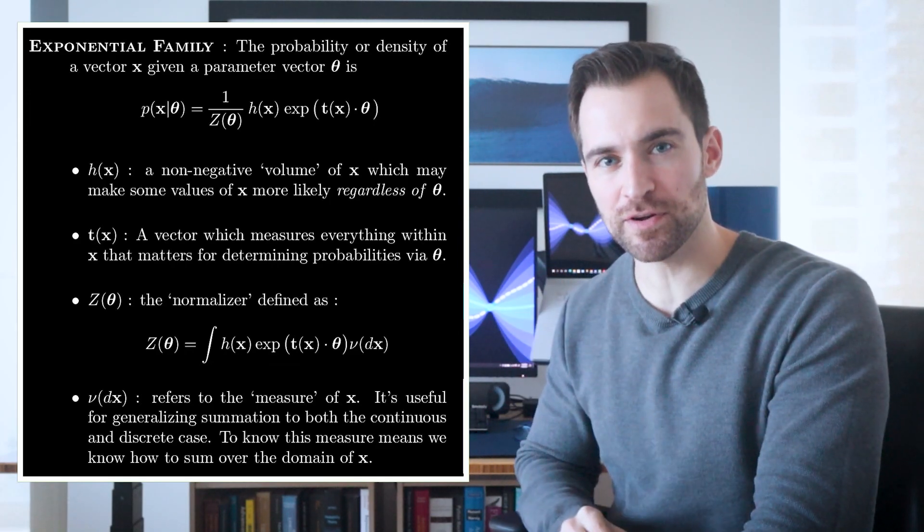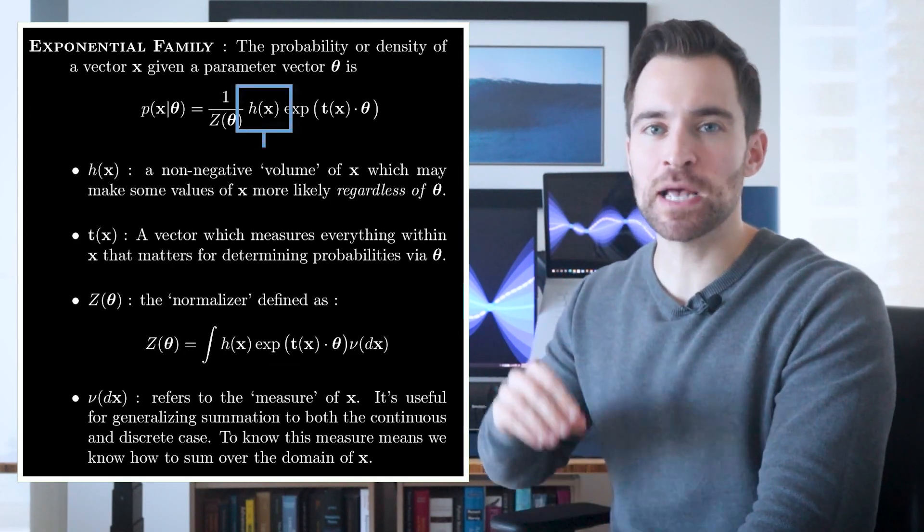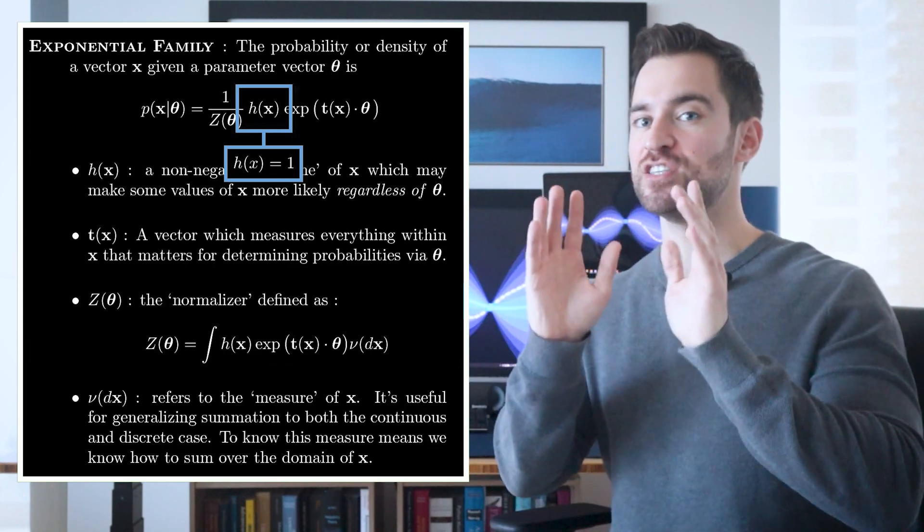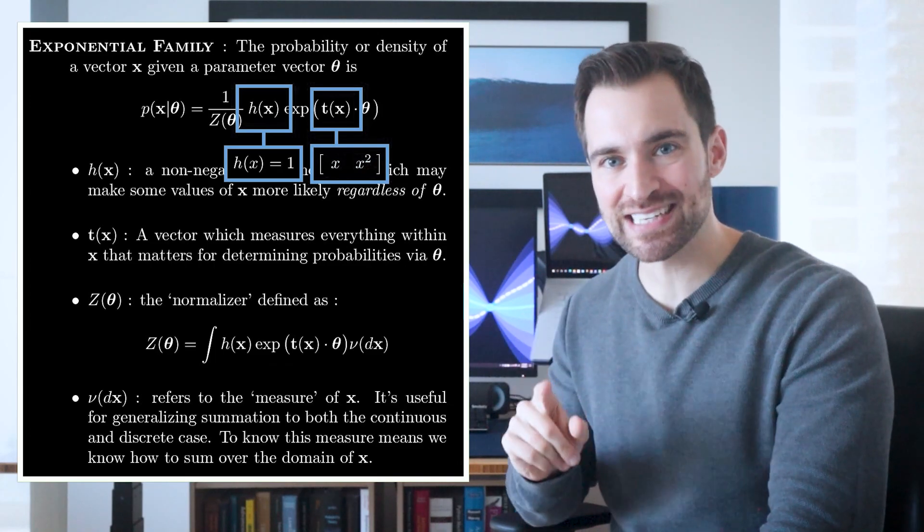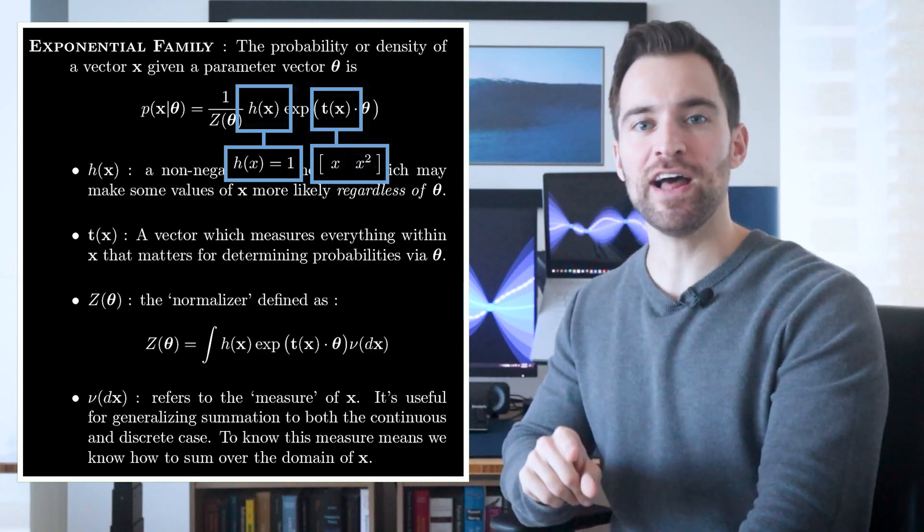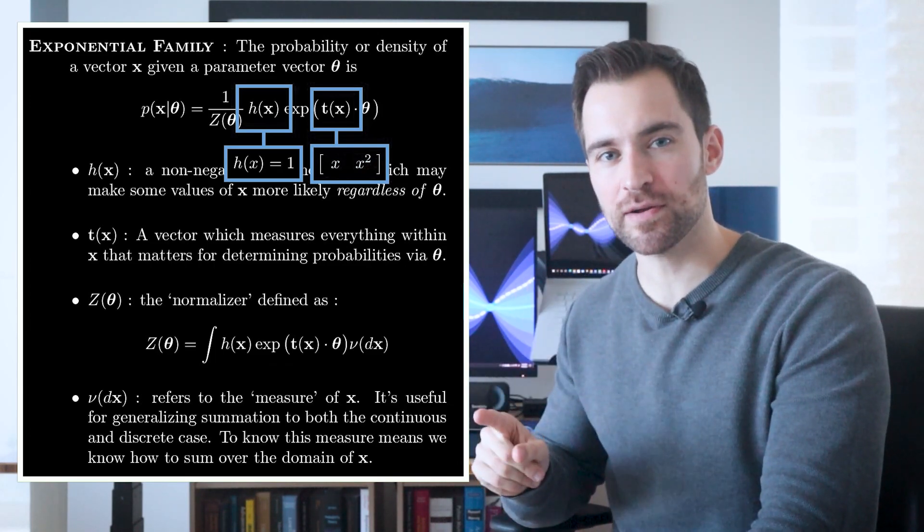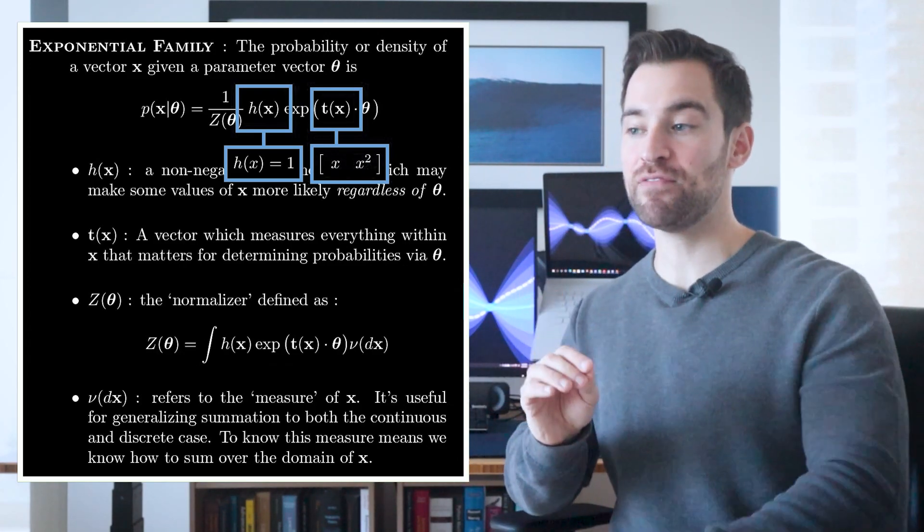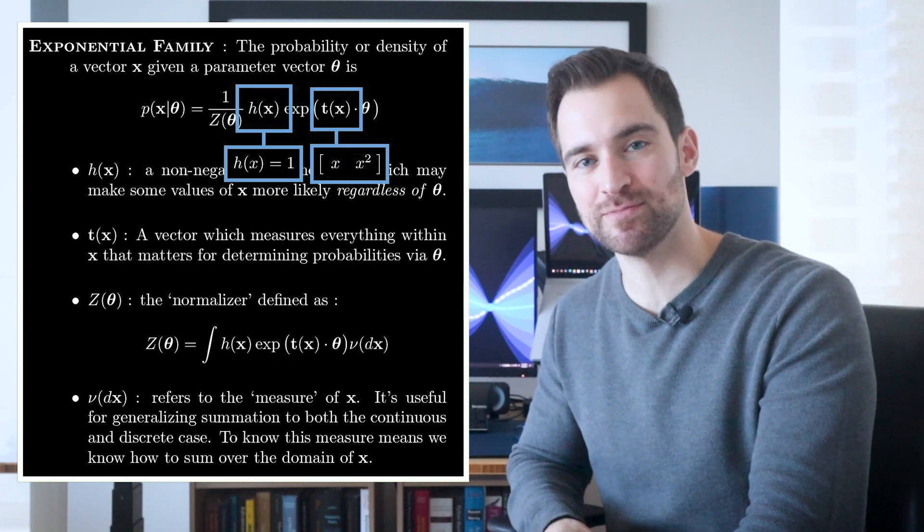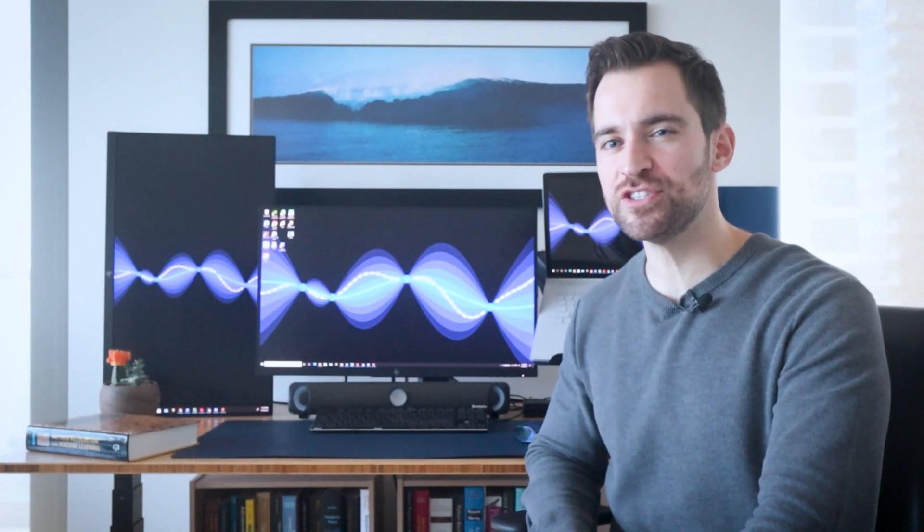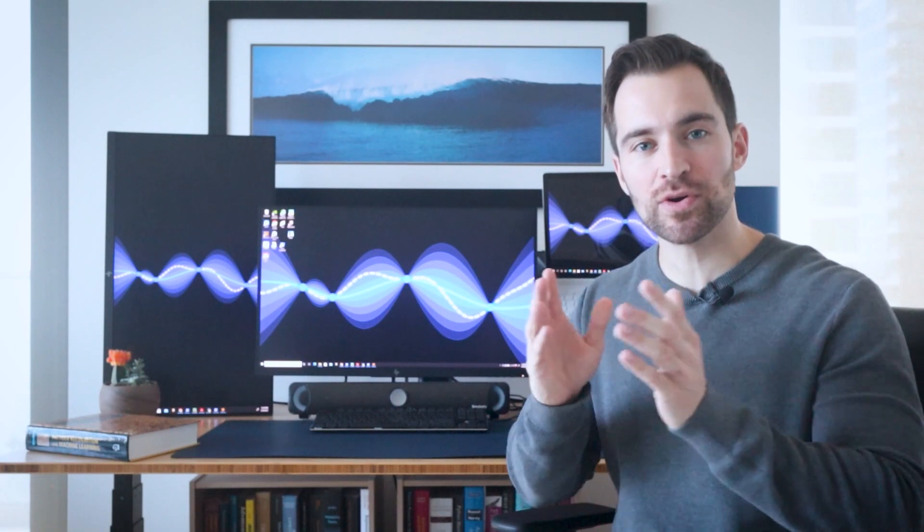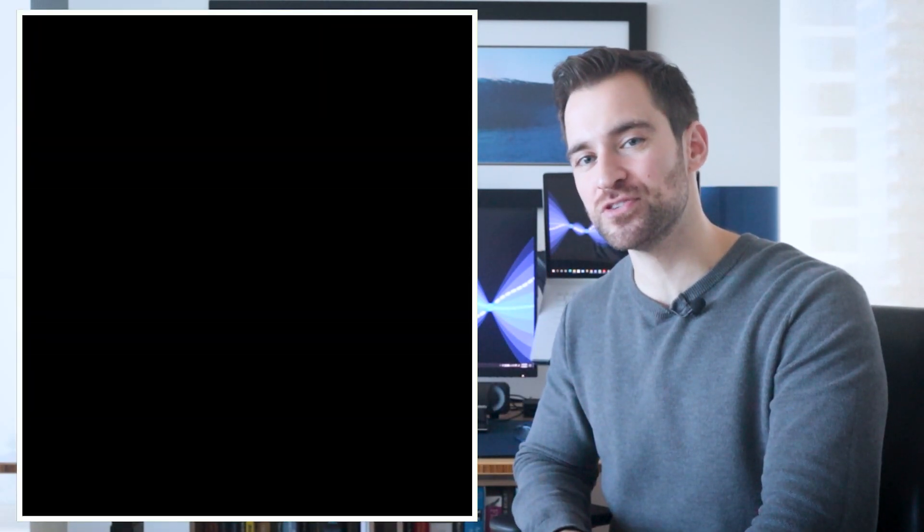In that case, h of x maps to 1. So all values of x have the same intrinsic volume. The sufficient statistics of the scalar value x maps to a length 2 vector with elements x and x squared. Finally, integration involves summing over the real line. From that, everything else falls from the definition of the exponential family. But recreating the normal distribution isn't the interesting part. It's that we have these degrees of freedom over h of x, t of x, and the discrete or continuous space. So let's explore some different choices.